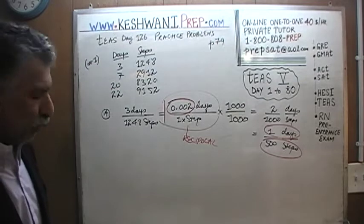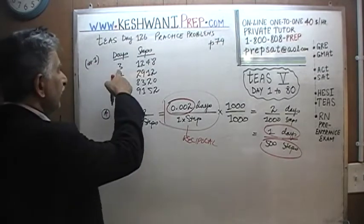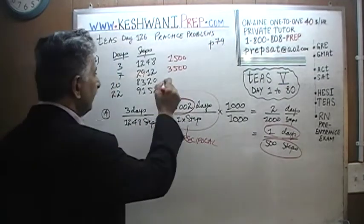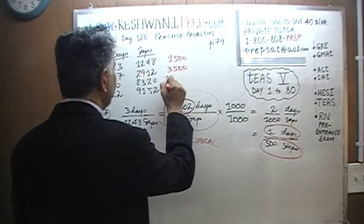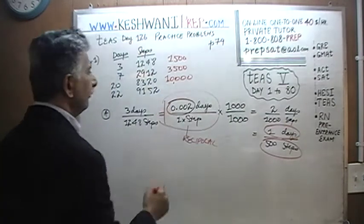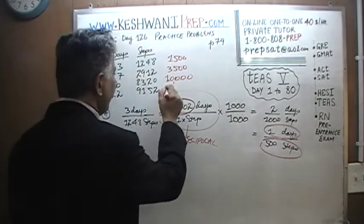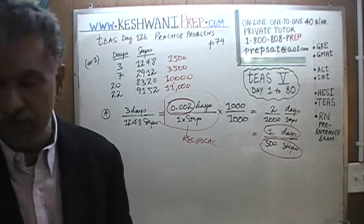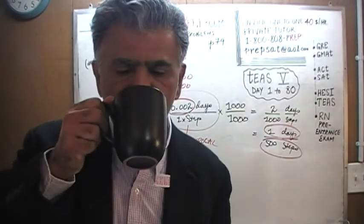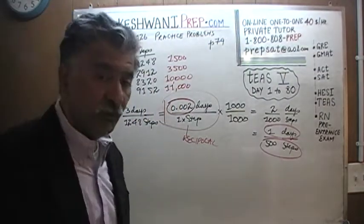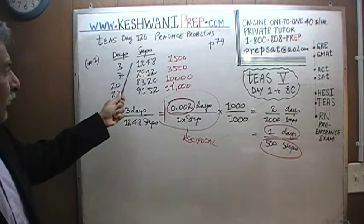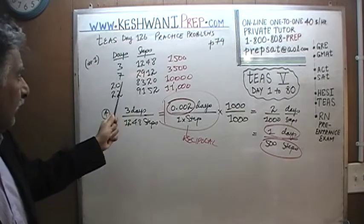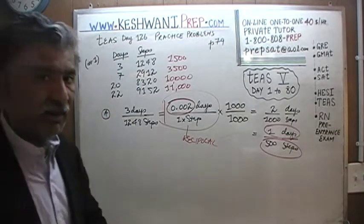At the rate of 500 steps per day, at the end of day 3 she would have taken 1,500 steps; at the end of day 7, 3,500 steps; at the end of day 22, 11,000 steps. But she only took 9,152 steps at the end of day 22 — she is clearly not going that fast. She is taking something closer to 400 steps per day. Because 4 times 3 is 12 — that's 1,200 steps; 4 times 7 is 28 — that's 2,800 steps; and 4 times 22 would give exactly 8,800, close to 8,000. She is taking around 400 steps, not 500.